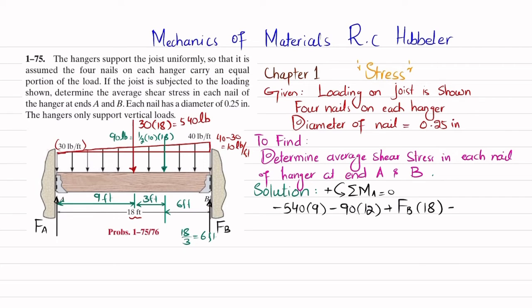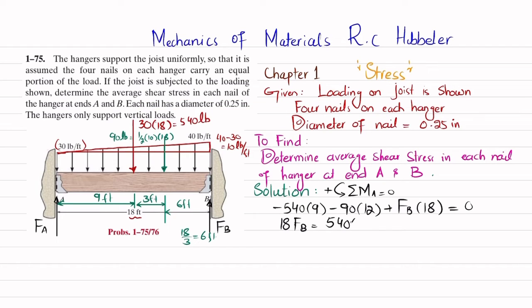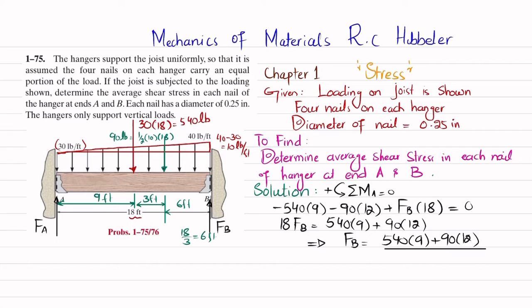The last moment is due to F_B at a perpendicular distance of 18 feet — counterclockwise, so positive: plus F_B times 18. Setting the sum equal to zero gives 18·F_B = 540×9 + 90×12, so F_B = (540×9 + 90×12) / 18, which equals 330 pounds.